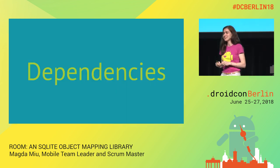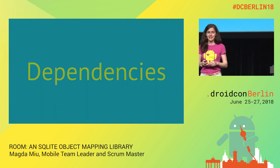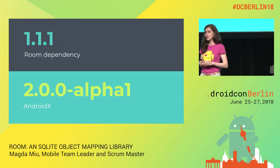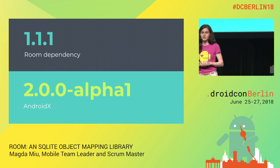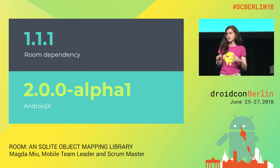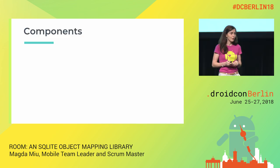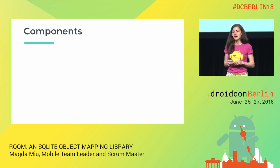First, we define the dependencies in our Gradle file. The current version of Room is 1.1.1, and if you're using the Android extension, the current version is 2.0. An important thing to mention is that Room works only for minimum SDK 14. After defining the dependencies, we define the components.